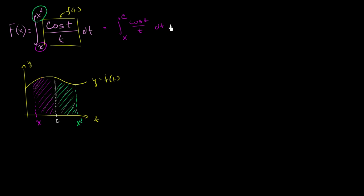And then to that, we're going to add the green area. And then we'll get the original area. So the green area, for the green area, our lower bound of integration is now our constant c. And our upper bound of integration is x squared. It's going to be of cosine t over t dt.